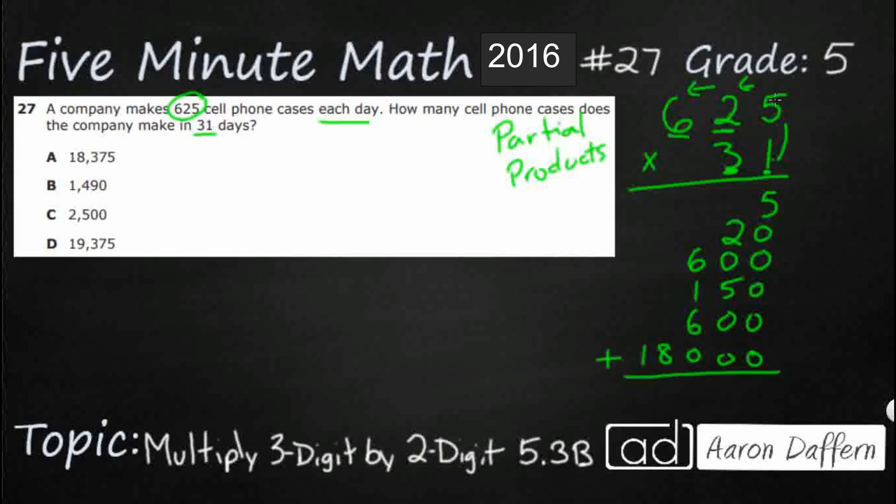Now we add all of this up. Holy cow, that's a lot of adding. That's going to be 5. That's going to be 7. That's going to be 12, 13. That's going to be 9. 19,375. Now that's the long way.